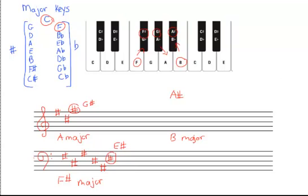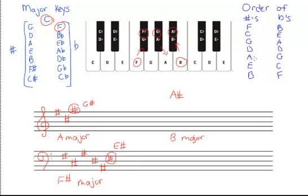Looking at the order of sharps — Father Charles Goes Down and Ends Battle — we find that A sharp is our last sharp. That means B major will have five sharps: F, C, G, D, and A, because A is the last sharp, and all sharps up to and including A apply.